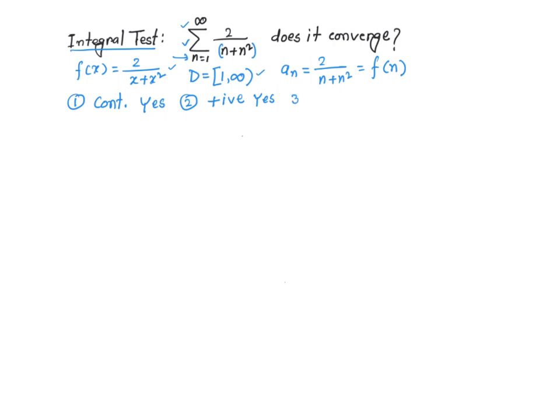Number three: is it decreasing? Of course the function is decreasing as well. As you can see, 2 divided by x plus x squared — as x gets bigger and bigger, 2 over x plus x squared gets smaller and smaller. So all three conditions are satisfied, and therefore we can use the integral test.